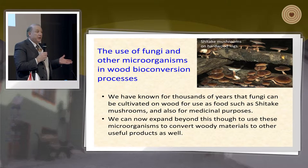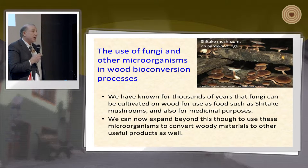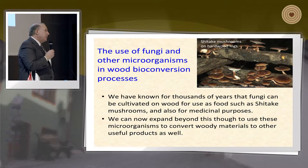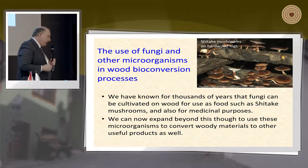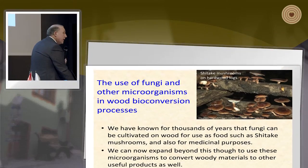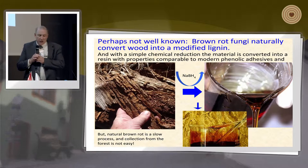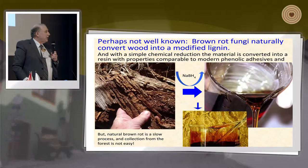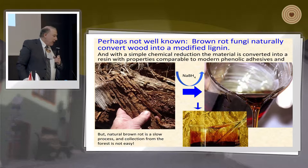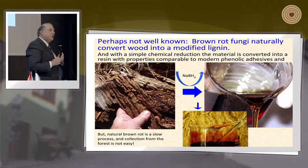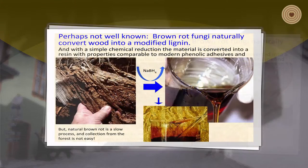We've known for years that we can grow fungi on wood and produce foods like shiitake mushrooms. We also produce pharmaceuticals from fungi and other organisms that feed on wood. But we can use these microorganisms now in different ways to bioconvert woody materials to other useful products. For example, there's a lot of brown rotted wood in the forest, and by going through a simple sodium borohydride reduction, you can easily convert brown rotted wood into a phenolic resin with properties equal to synthetic phenolic resin.